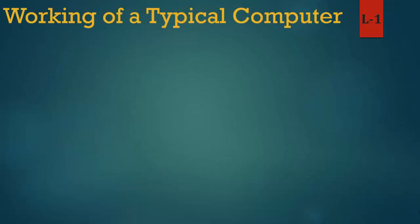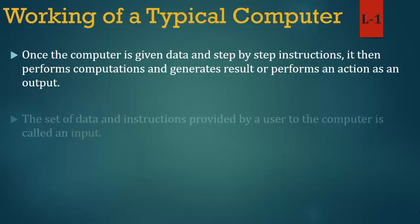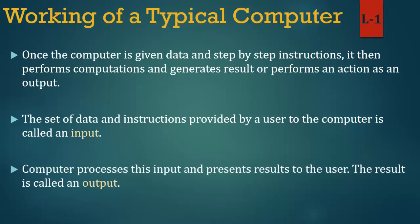Once the computer is given data and step-by-step instructions, it performs computations and generates results or performs an action as an output. The set of data and instructions provided by a user to the computer is called an input. The computer processes this input and presents results to the user. The result is called an output.